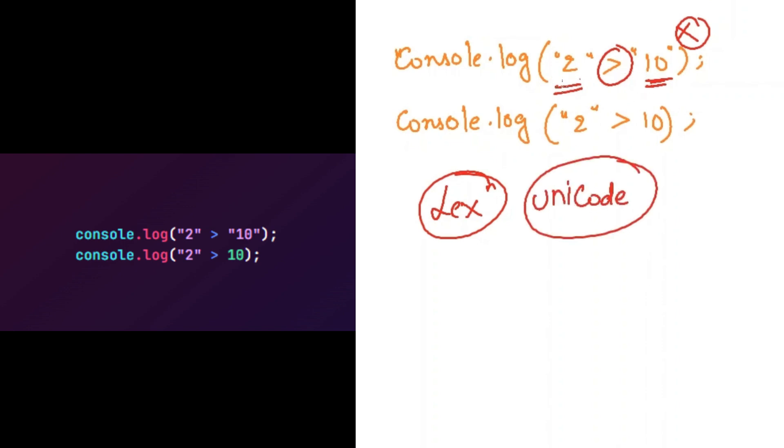The first character in this string will be 2. The first character in this string will be 1. So 2 is converted into the Unicode value, that is 50. 1 is converted into the Unicode value, that is 49. As 50 is greater than 49, it will return true.